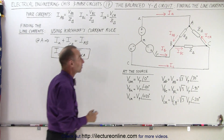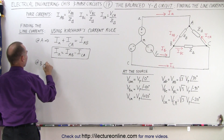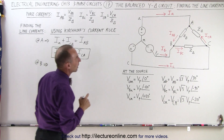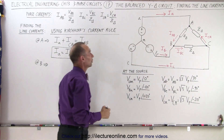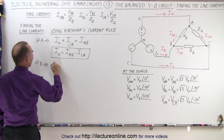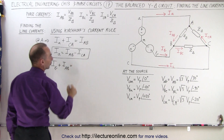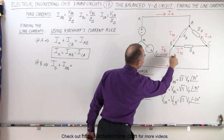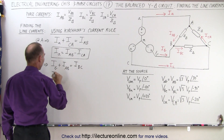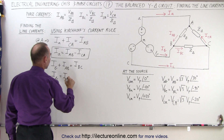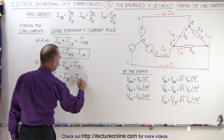We do the same for the next node at B. At B, the line current IB and the phase current IAB enter the node, and the current leaving the node is IBC. This means that the line current IB can be found by taking the phase current IBC and subtracting from that the phase current IAB.